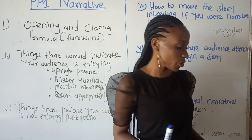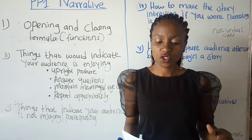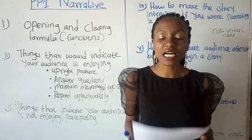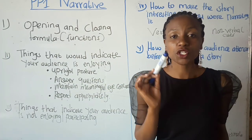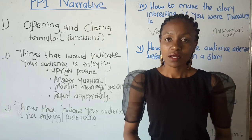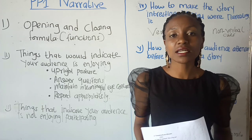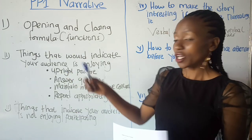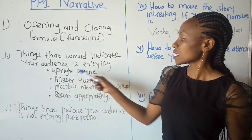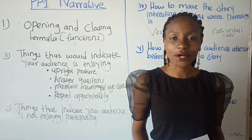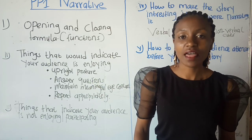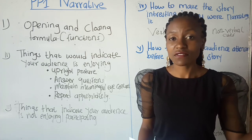The next question: mention two things that will indicate your audience is enjoying the story as you narrate. These are some of the things that will show you that your audience is enjoying the story. One: if the audience is sitting in an upright posture — remember you're supposed to give a full answer. Two: if the audience is answering questions; if they don't answer, they are not participating.